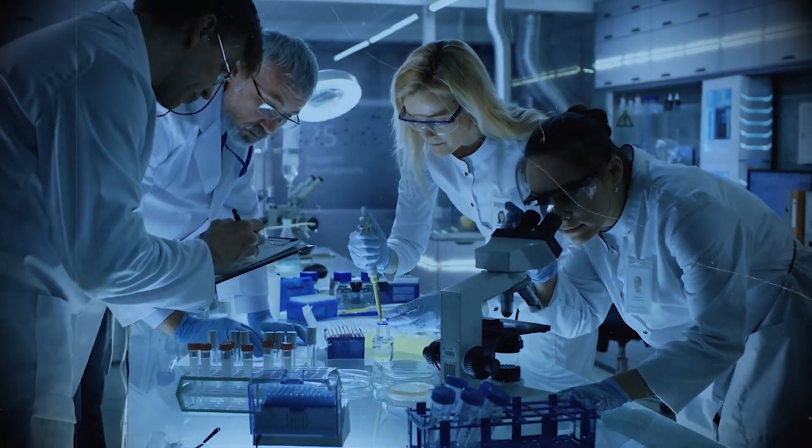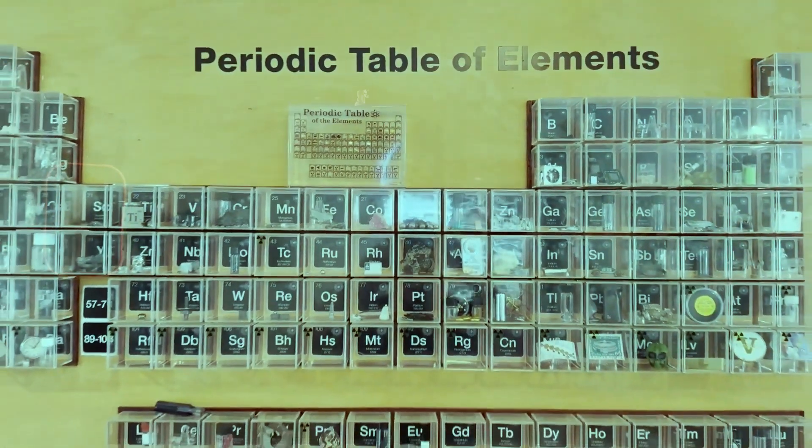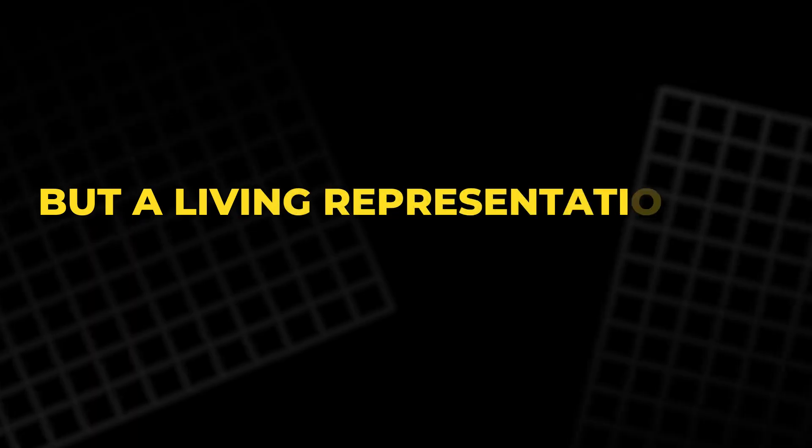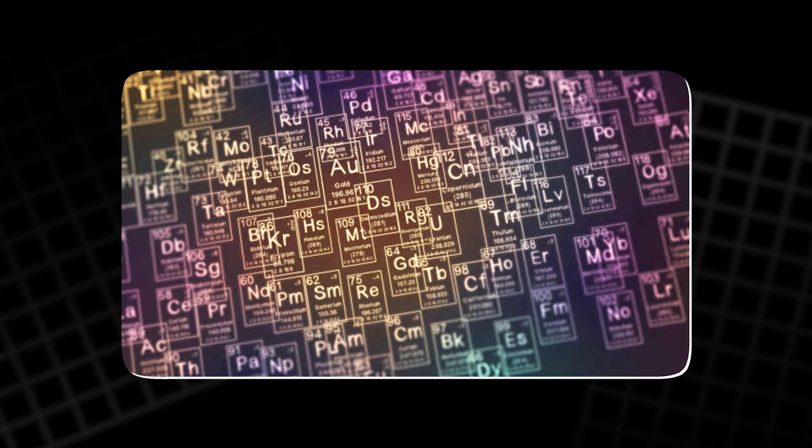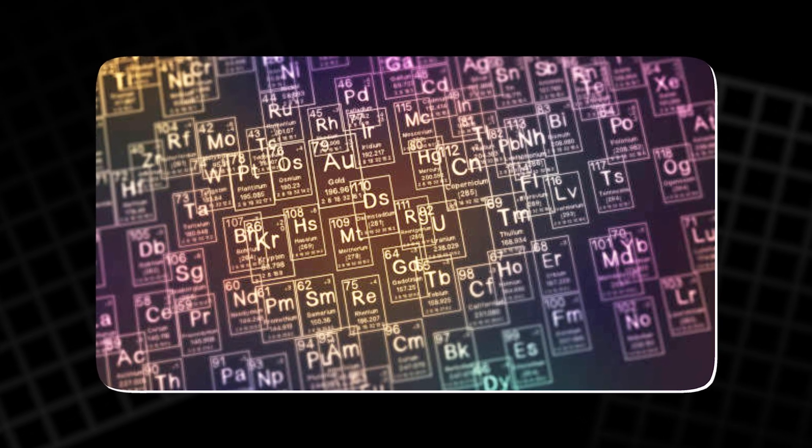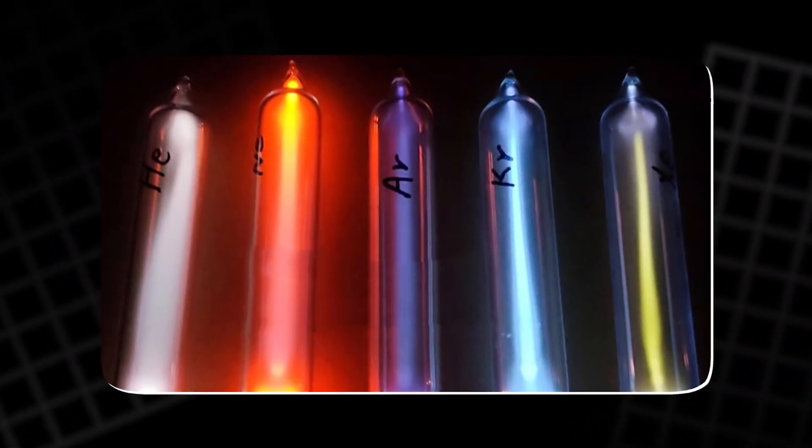Experiments like this have long inspired students and researchers alike. They demonstrate how the periodic table is not just a chart of symbols, but a living representation of how elements behave. By observing their colors, one can see the periodic trends come to life, from helium's gentle glow to xenon's mysterious shimmer.